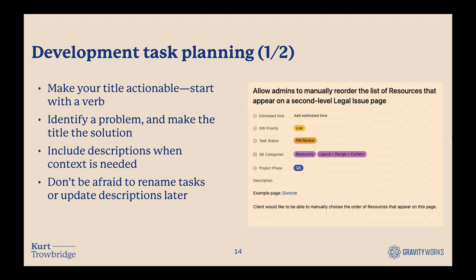Tasks should identify a problem — whether it's a business rule we need to solve or a QA issue that needs fixing — and then the title should be the solution to that problem. For example, 'allow editors to manually reorder the resources list' is what we're getting at. In these tasks, feel free to include descriptions, screenshots, and any additional context helpful to understanding the problem. Remember too that these aren't set in stone — if your ideas change or your plans change, you can rename the task and update the description to keep it accurate.